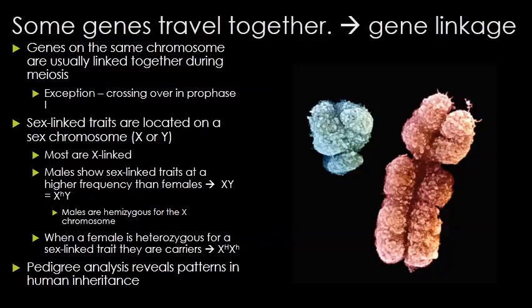Another major exception is that some genes can travel together in a process called gene linkage. This could be genes that are just close together on the same chromosome, though crossing over can disrupt that. More commonly, we talk about sex-linked traits — traits that are on the X or the Y chromosome. Most sex-linked traits are X-linked because the Y chromosome doesn't carry very much, but males with recessive X-linked diseases will show those diseases because they only have one X chromosome.